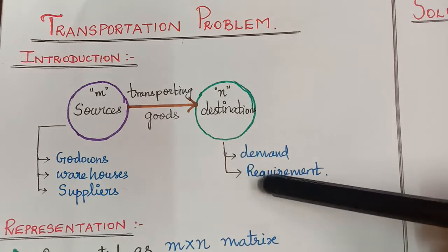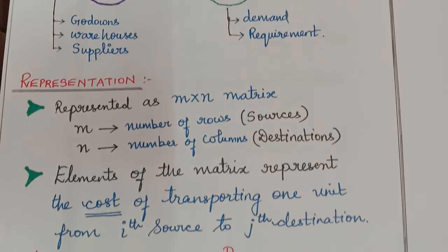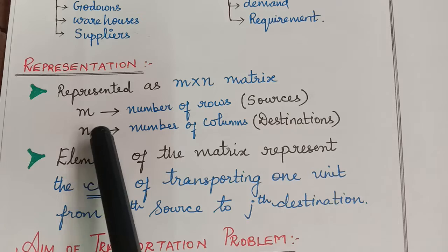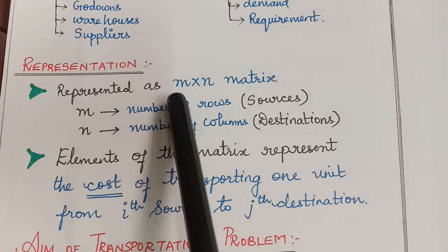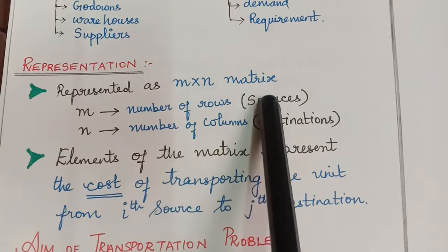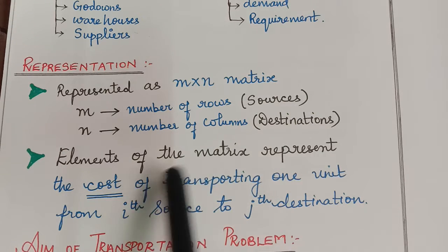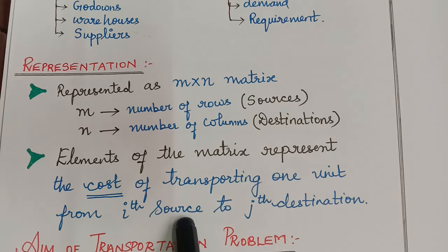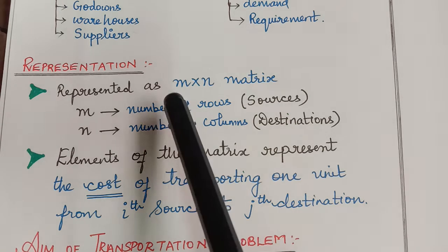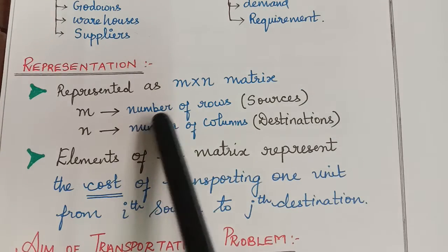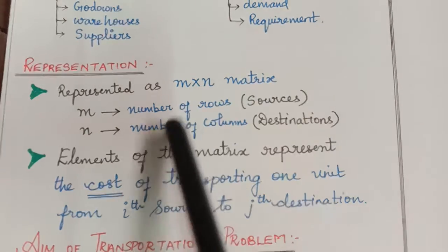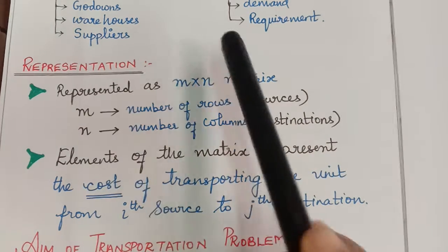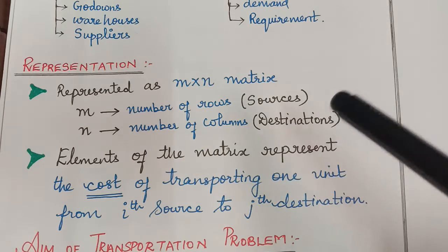Next, we shall see the representation of a transportation problem. In general, the transportation problem is represented as an M cross N matrix. The elements of this matrix represent the cost of transporting one unit from the ith source to the jth destination. M represents the number of rows, that is the sources, and N represents the number of columns, that is the destinations. So a transportation problem is represented in the form of a matrix.